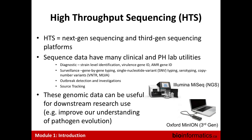The term 'high-throughput sequencing' has gradually become more popular than 'next-gen sequencing,' partly to clarify the distinction between what's called next-gen sequencing versus so-called third-gen sequencing based on single-molecule sequencing. Using 'high-throughput sequencing' as a collective term avoids having to specify whether you're talking about Illumina sequencing, MinION sequencing, or PacBio sequencing, which are some of the third-generation sequencers.